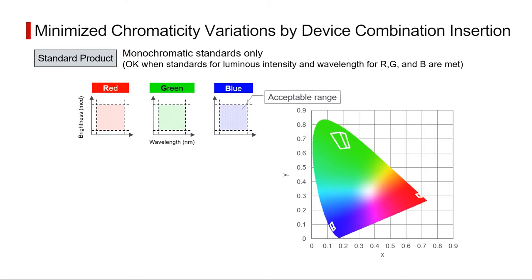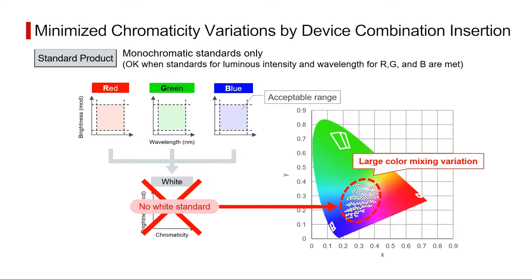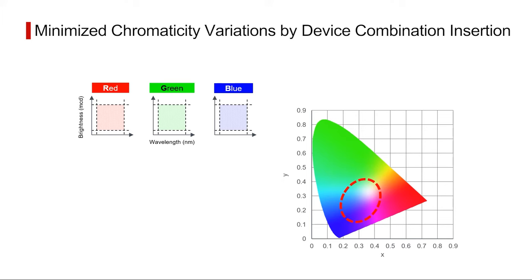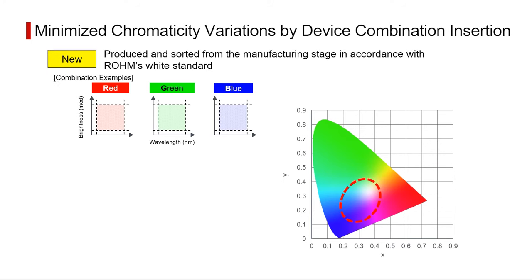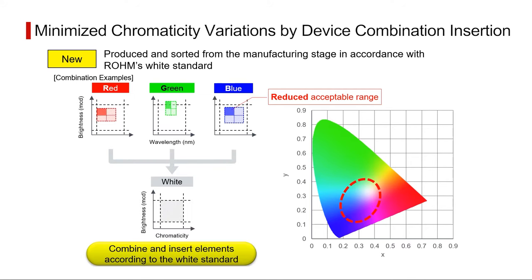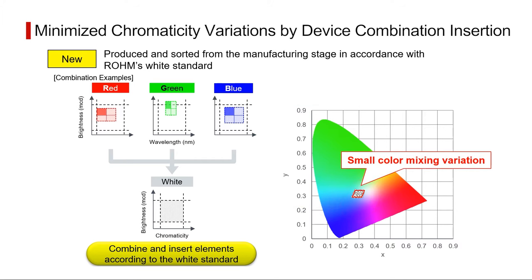Rome performs sorting based on white luminescence to eliminate color variations when emitting mixed colors. We have succeeded in minimizing color variations when mixing colors by producing elements that conform to the white standard from the manufacturing stage.